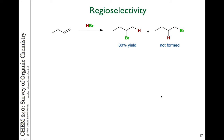When we talk about alkenes that are differentially substituted — that is, there are different amounts of substitution on one end or the other of a double bond — we have the possibility of forming multiple products or regioisomers. These are constitutional isomers, and it all depends on which end the proton ends up on and which end the bromine ends up on. So if you take 1-butene and react with HBr, what's observed is 2-bromobutane in 80% yield, and 1-bromobutane is not formed. The reaction is selective for putting hydrogen on the least substituted carbon and bromine on the most substituted carbon.